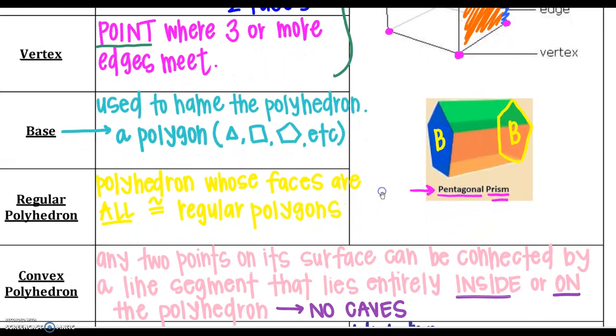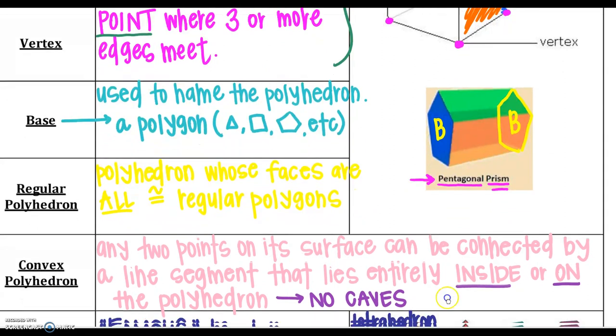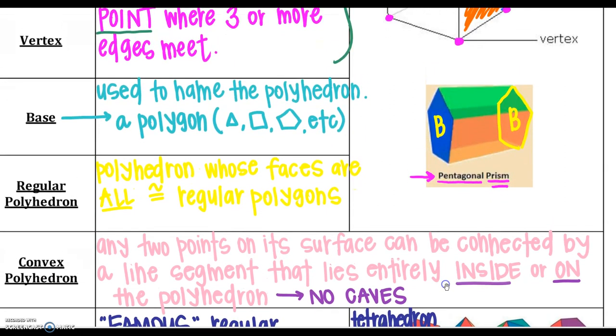Regular polyhedrons are just polyhedrons whose faces are all congruent. Convex, any two points on the surface can be connected by a line segment. So there's no concave points. So going back to 2D, I may have a pentagon that looks like that. That is convex. Concave is when something indents inside, and that's the same thing that can be applied to a polyhedron.